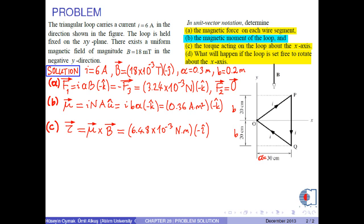D. Determine what will happen if the loop is set free to rotate about the x-axis. Since the torque is in the negative x-direction, the loop starts to rotate around the x-axis towards the screen. Or, as the final remark, it oscillates around the x-axis back and forth.